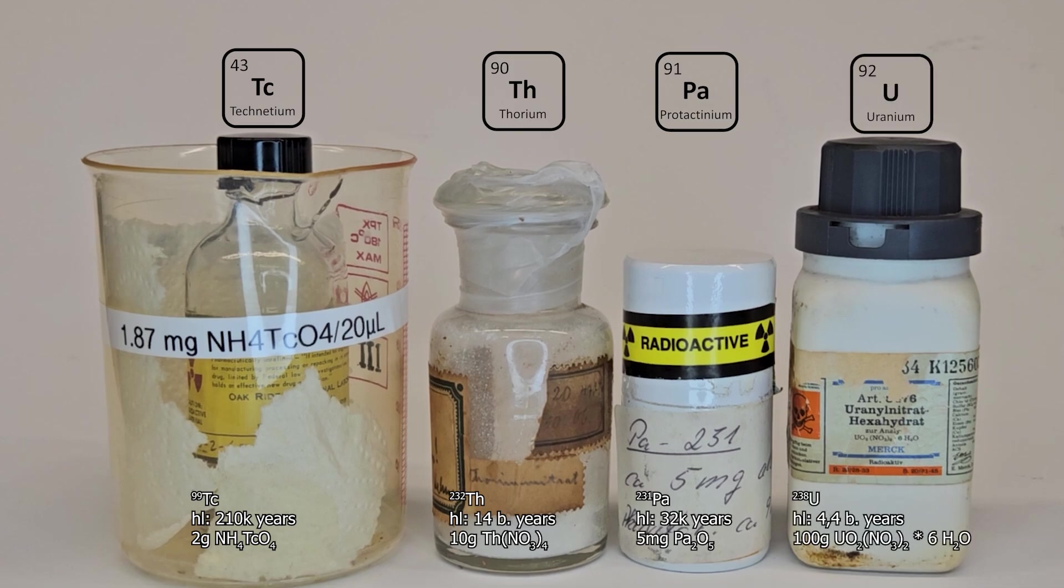Protactinium 231 is much more exotic and has a half-life of around 32,000 years. And here we are talking about milligrams and even they are very scary. And then we have around 100 grams of uranyl nitrate. The uranium 238 contained in it, which makes up 99.3% of the uranium, has a half-life of 4.4 billion years. Unfortunately, we do not have visible amounts of promethium 147 anymore.